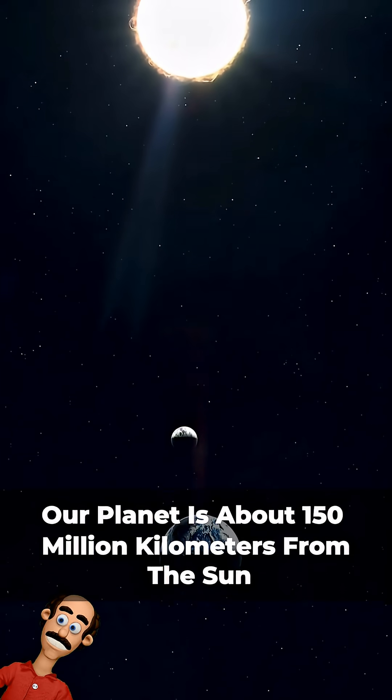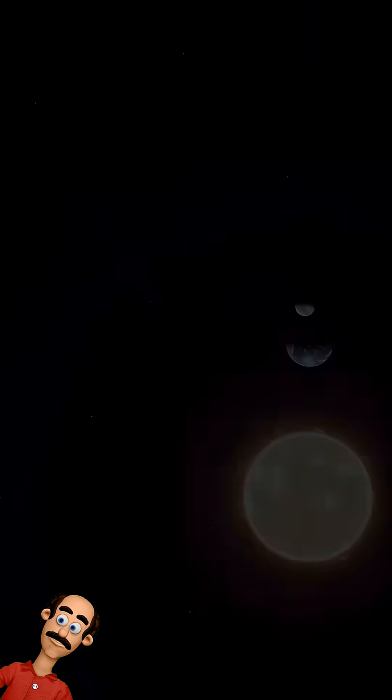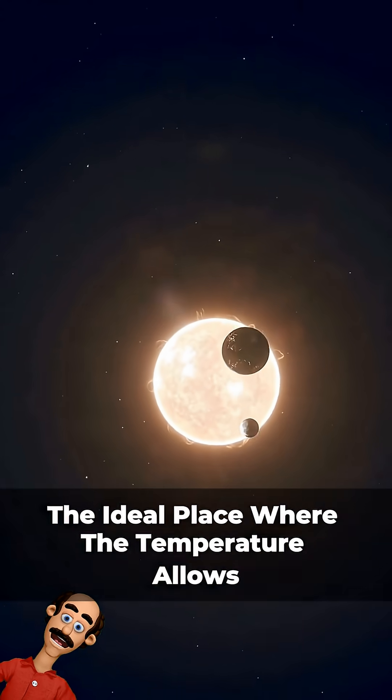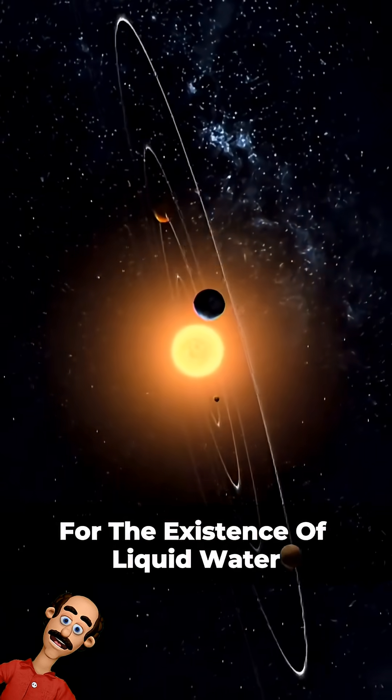Our planet is about 150 million kilometers from the sun, within a region that scientists call the habitable zone, the ideal place where the temperature allows for the existence of liquid water.